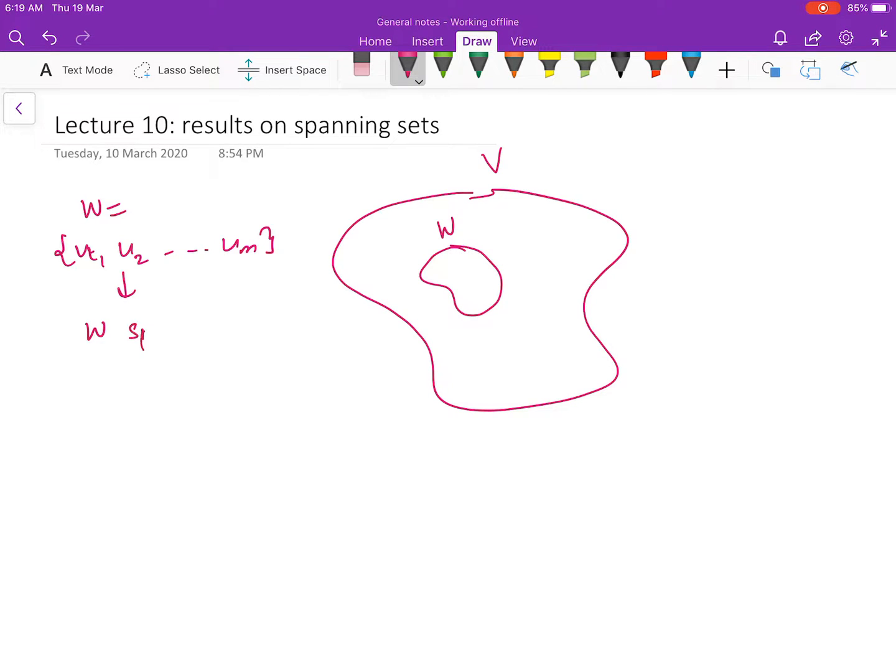We say that W spans V if every element of V can be written as a linear combination of elements of W. It means you can just concentrate on the smaller set, you don't need to concentrate on the larger set. Every other element will be a linear combination of elements here.